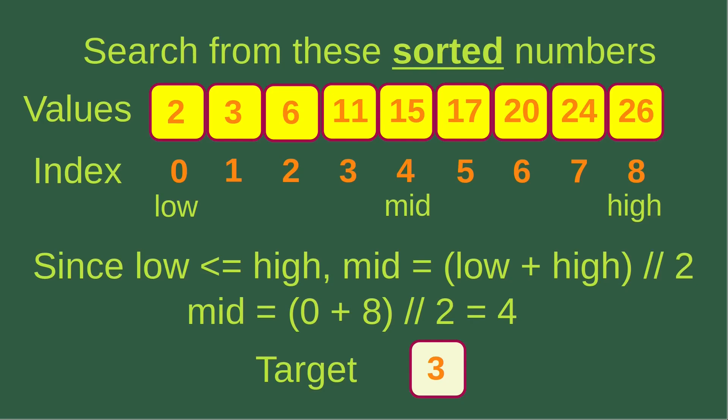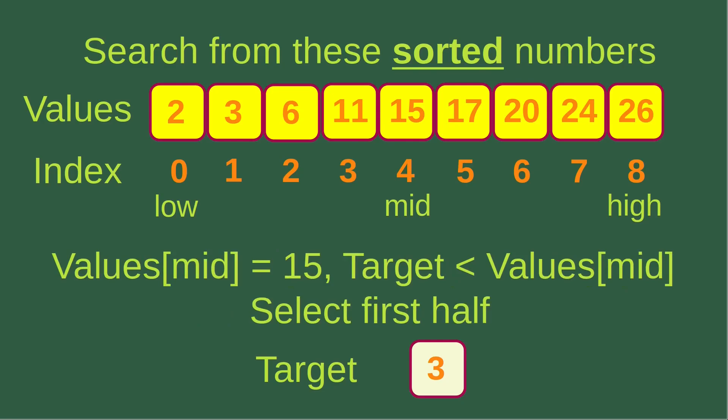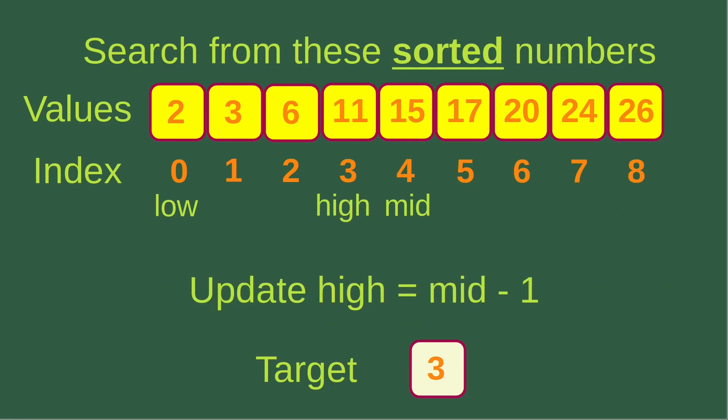Since now we have the low index which is zero, and high index which is eight, these two numbers satisfy low is smaller than or equal to the high index. We can calculate the mid-index, which is equal to low plus high, and then I take the integer division by two. So mid is equal to number four. We can find the middle element indicated by the mid-index. The mid-index is four, and the value corresponding to this index is 15. Since the target is smaller than that number, we just handle the first half and ignore the right-hand part. We update the high index, which is equal to mid minus one, so high becomes number three.